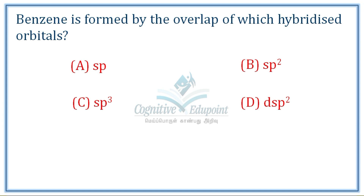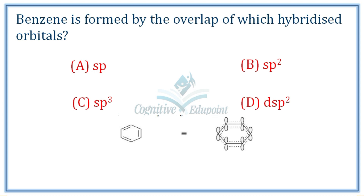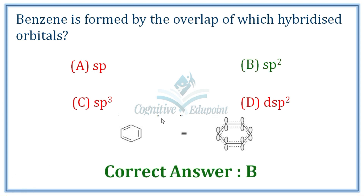Next question: Benzene is formed by the overlap of which hybridized orbitals? From school chemistry, benzene comprises 6 sp2 hybridized carbons. So the answer is B — sp2 hybridized orbitals.